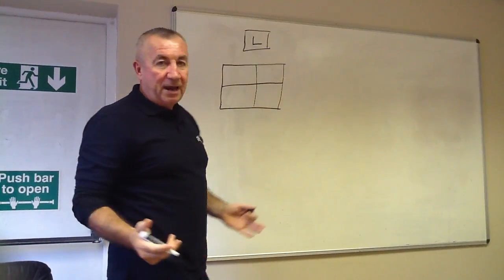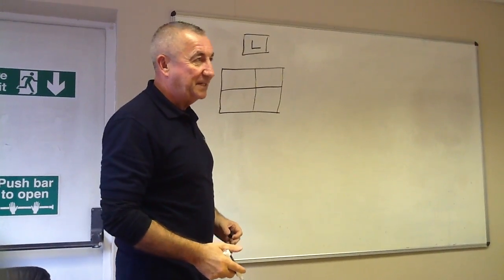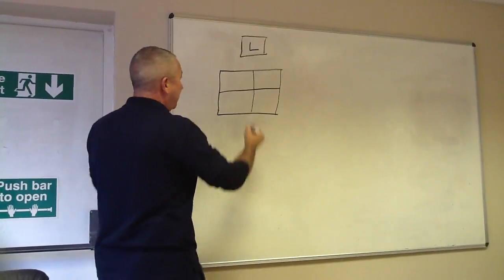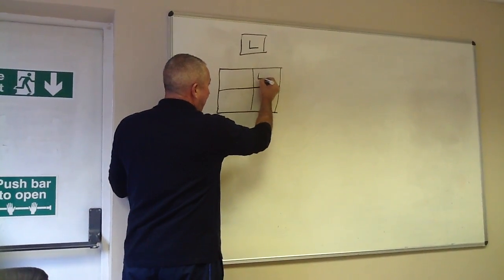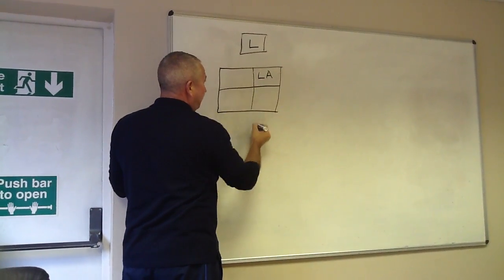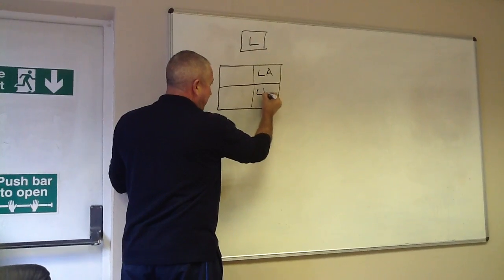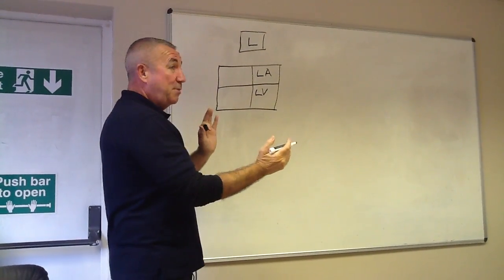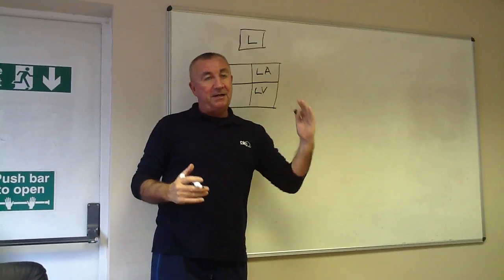The heart obviously is not a square in true anatomy but for our purposes this is fine. Into the squares we are going to pop LA into the top left and LV into the bottom left. It is a mirror image, remember, so this represents the left side.